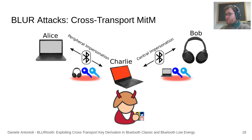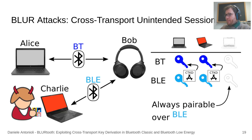By combining central and peripheral impersonation attacks, Charlie can mount a cross-transport man-in-the-middle attack. As a fourth attack, Charlie can also pair on the unused transport as an anonymous device to establish unintended sessions with Alice and Bob. For example, Alice and Bob are running a secure session over BT, and Charlie pairs over BLE with Bob as an anonymous device. As a result of the pairing process with CTKD, he becomes a trusted device on both BT and BLE. The attack can also be conducted over BLE with Alice, and over BT with both devices if the victims run a secure session over BLE.